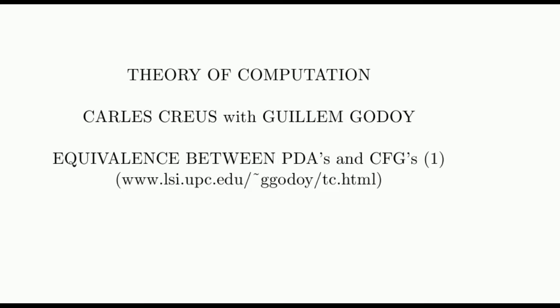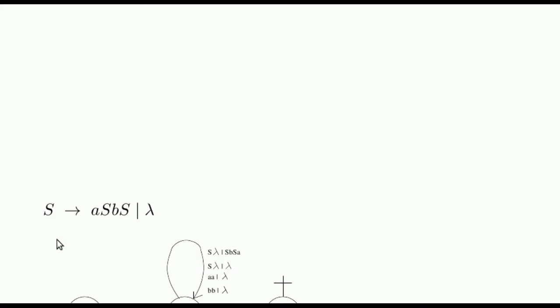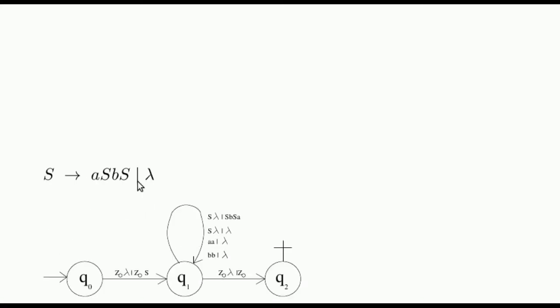We start justifying how to convert a CFG to a PDA recognizing the same language. We will see it with an illustrative example. This grammar generates a language of well-parenthesized words, where we use A as opening parenthesis and B as closing parenthesis.